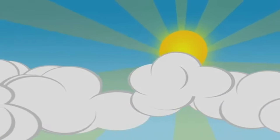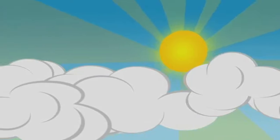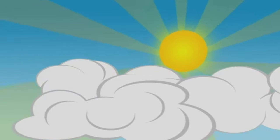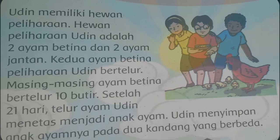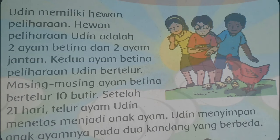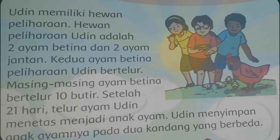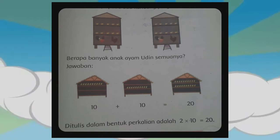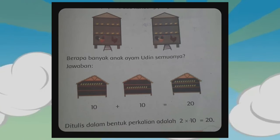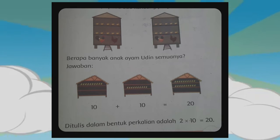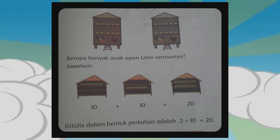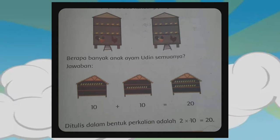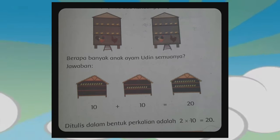Nah, mudah kan anak-anak membuat gambar ayam? Kalian tadi bisa kalian praktekkan di rumah ya. Perhatikan soal cerita berikut ini. Berapa banyak anak ayam Udin semuanya? Caranya bagaimana? Ayo, caranya 10 ditambah 10 sama dengan 20. Jika ditulis dalam bentuk perkalian adalah 2 kali 10 yaitu 20.